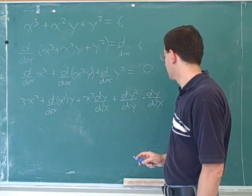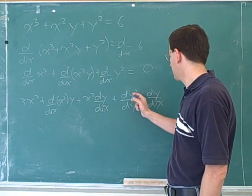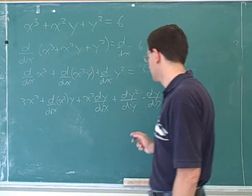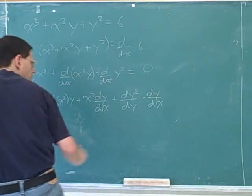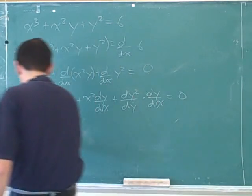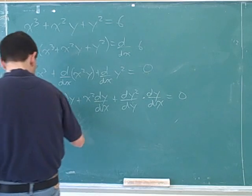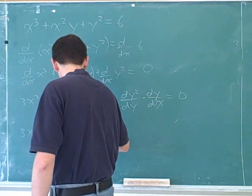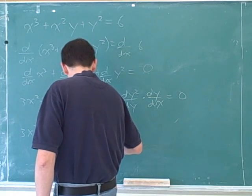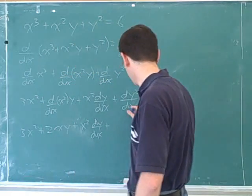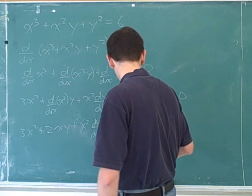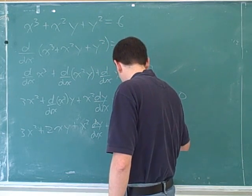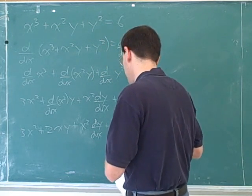And over here we have to use the chain rule, since y is a function of x. We've got an outside function which is y squared and an inside function which is y. So the derivative of x squared is 2x times dy dx. We don't simplify because that's what we're trying to figure out. Derivative of y squared with respect to y is 2y times dy dx.